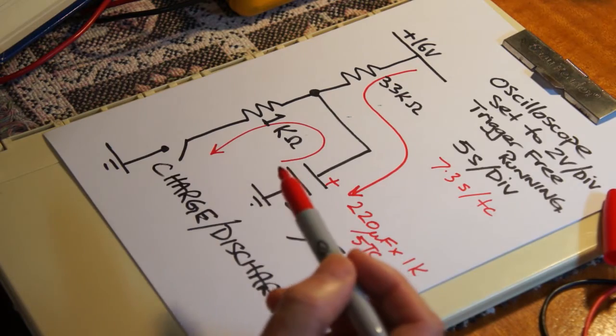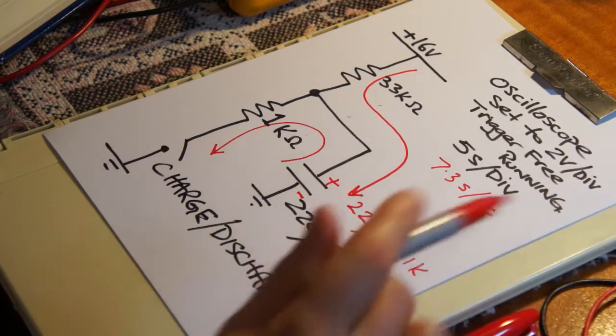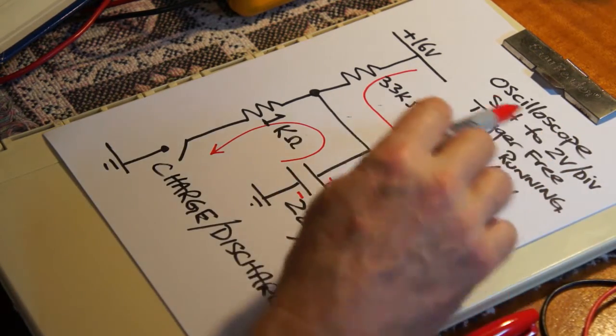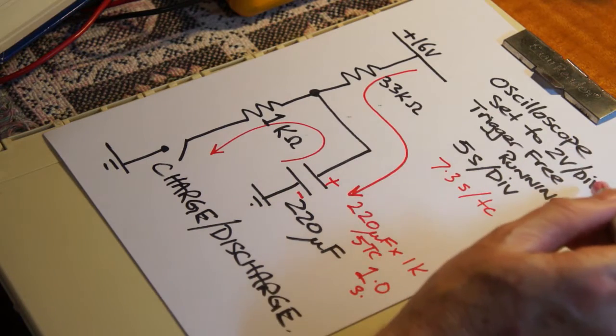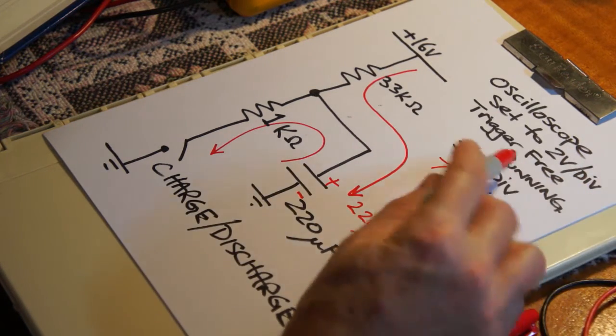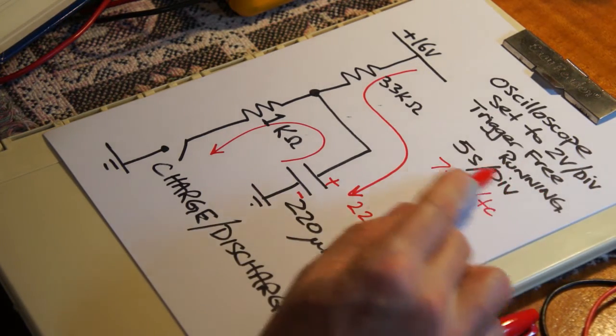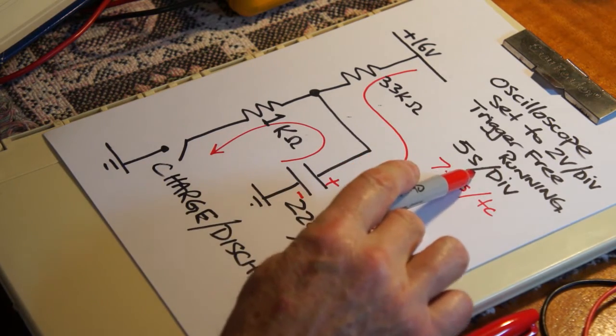That's really super important. Another thing to mention before we do start, the oscilloscope is set to two volts per division, vertical. The trigger is free running and the horizontal is set to five seconds per division.